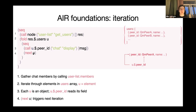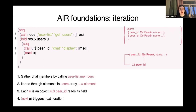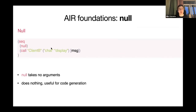If 'next' is placed at the end, this fold is a left fold — it handles values from left to right. If 'next' is placed first, this fold becomes a right fold — like in Scala or other functional languages — starting from the very end of the array and handling elements from right to left. The 'null' instruction is very simple — it takes no arguments and does nothing.